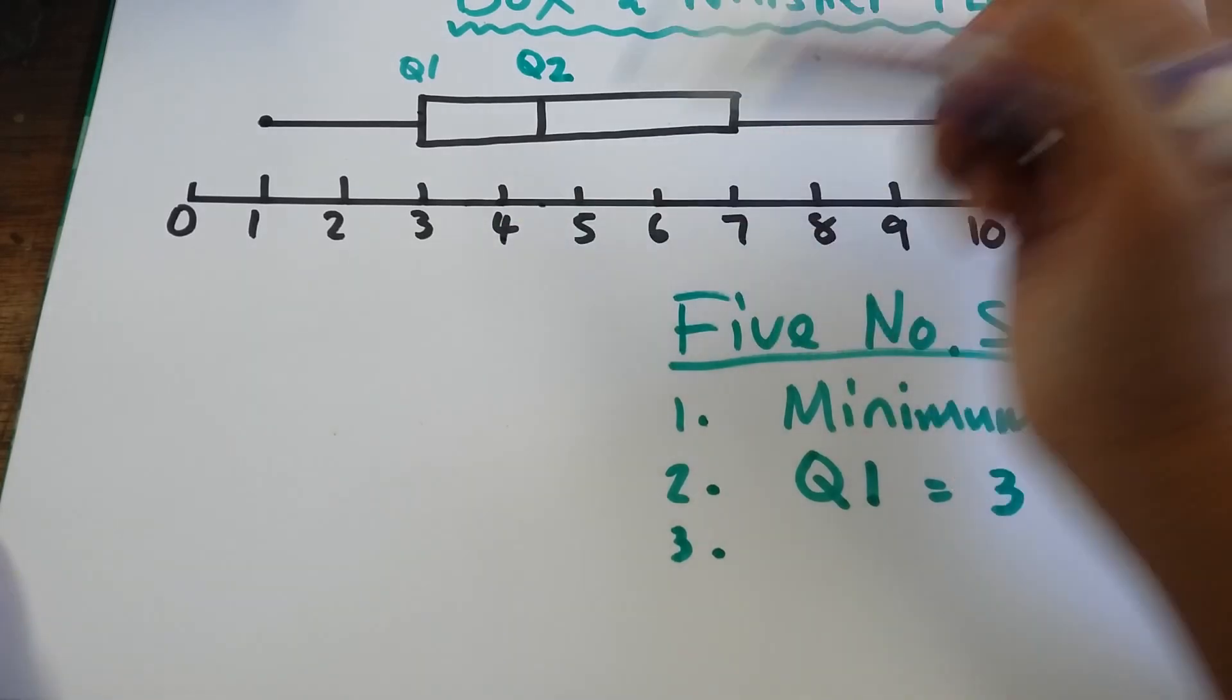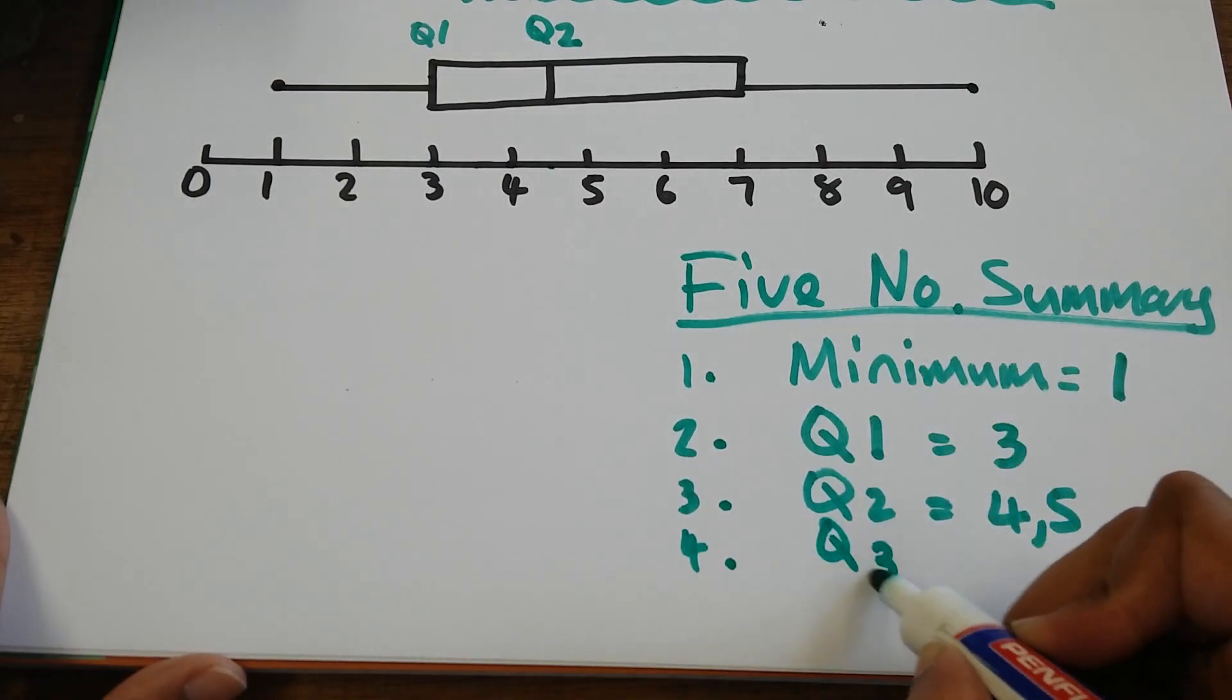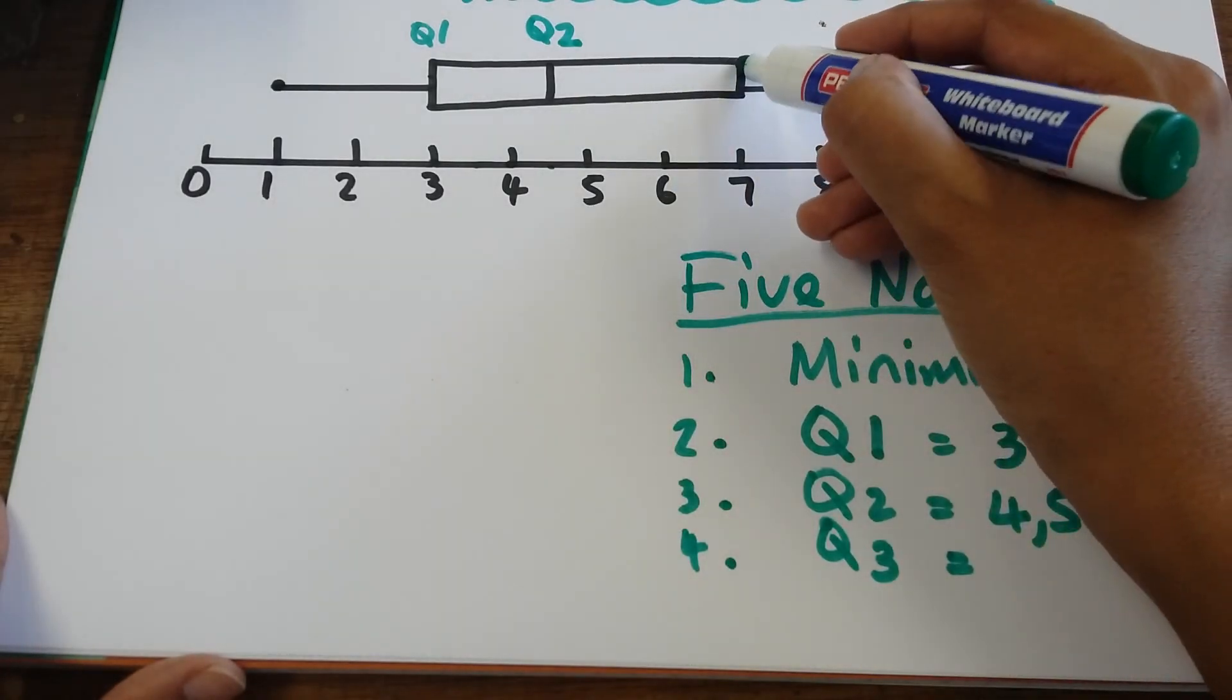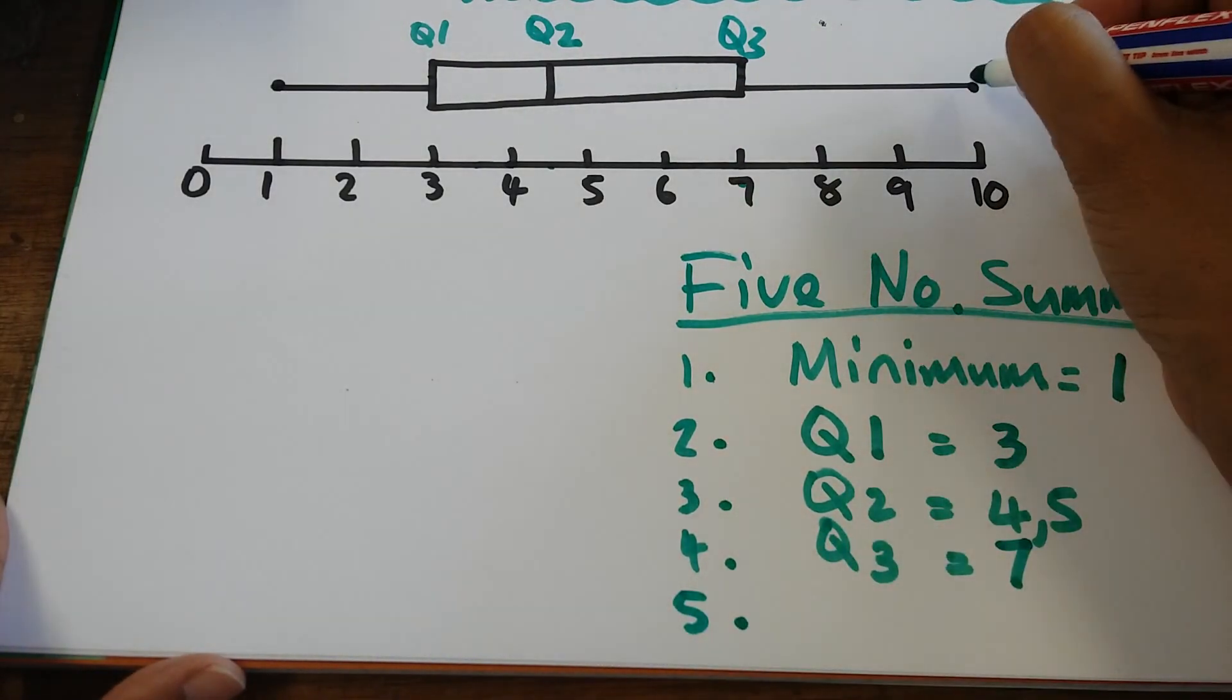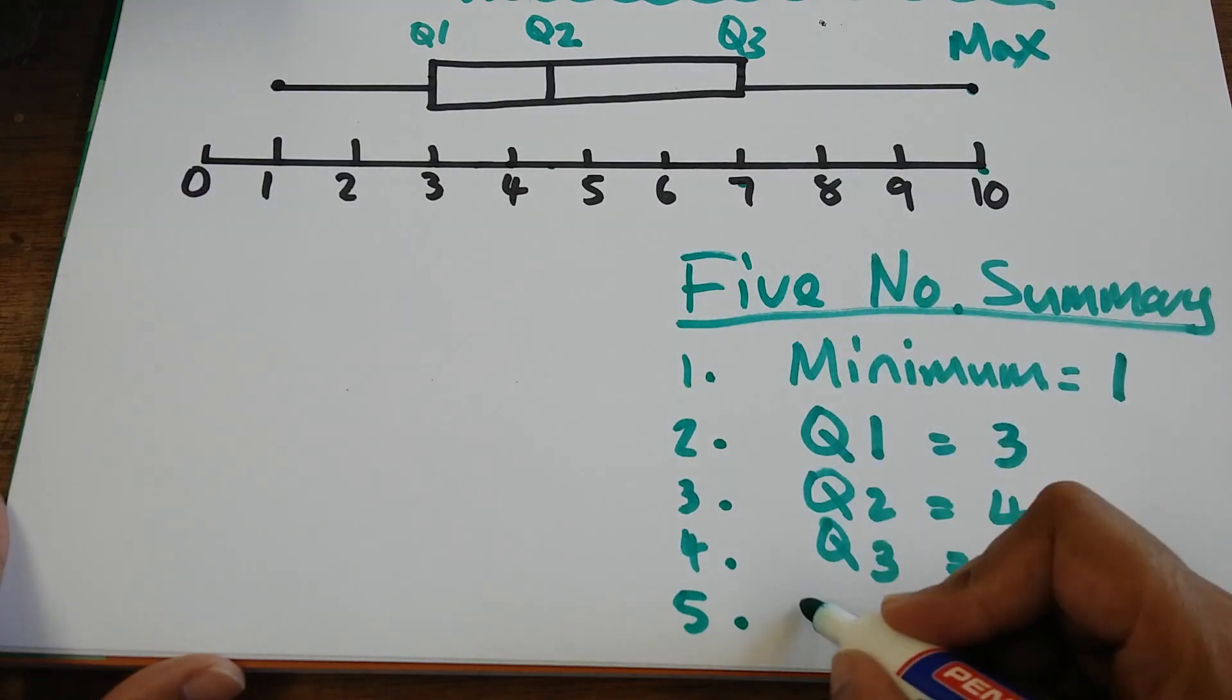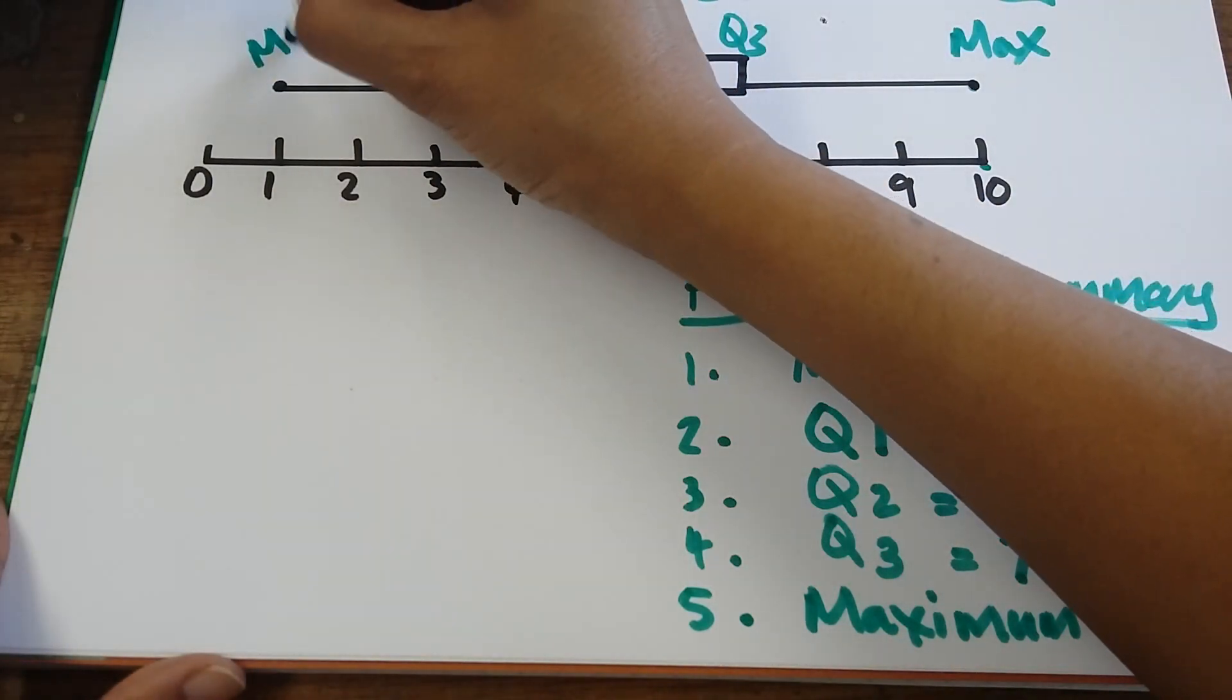Then I have Q3. Back to my box and whisker, Q3 would be here, coming down. Q3 equals seven. And finally, my maximum value. Using my scale, my maximum value is equal to ten.